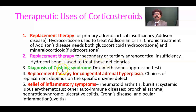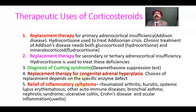Diagnosis of Cushing's syndrome is done by the dexamethasone suppression test. Replacement therapy for congenital adrenal hyperplasia is also indicated, and the choice of replacement depends on the specific enzyme defect.